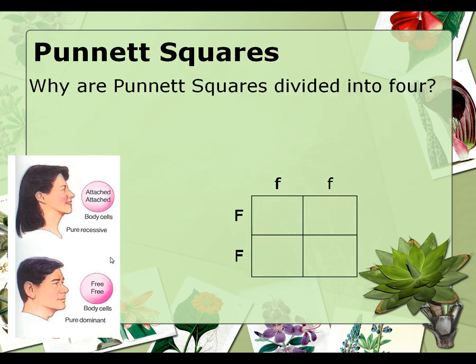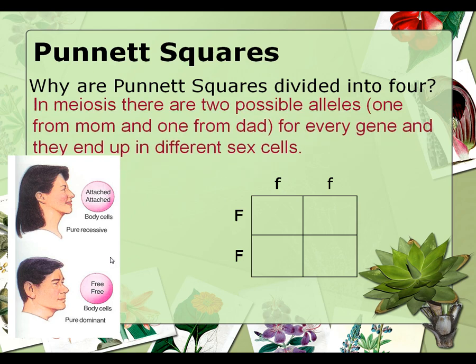Why are Punnett squares divided into four squares? The reason is that in meiosis, there are two possible alleles — one from your mom and one from your dad for every gene — and they end up in different sex cells. For our example, we are going to use earlobes. Attached earlobes are attached to the side of the neck, whereas free earlobes have a true lobe. Free earlobes are dominant over attached earlobes.